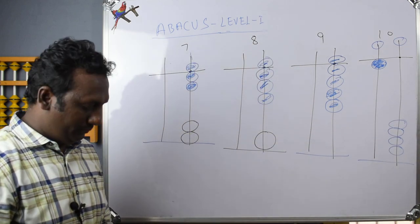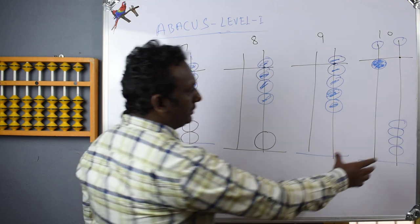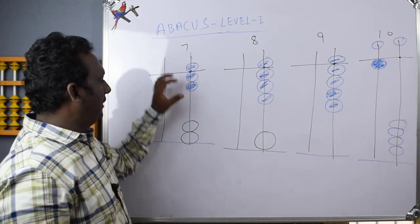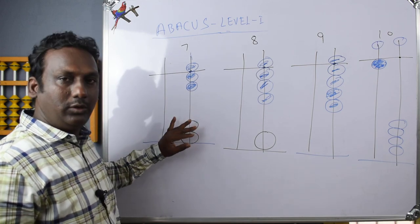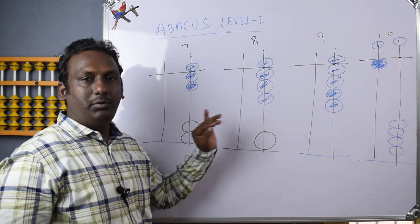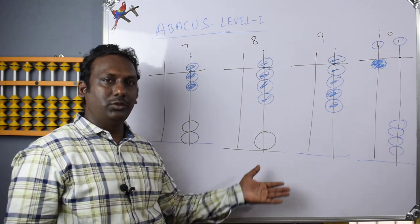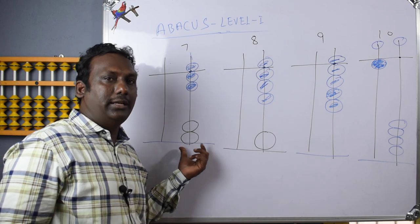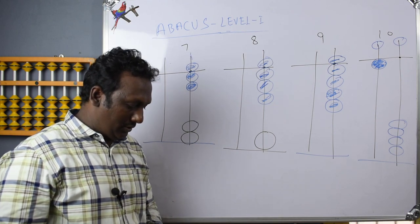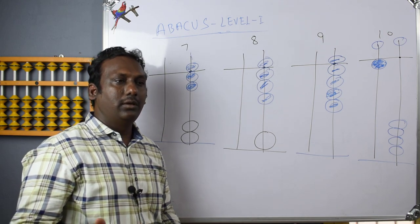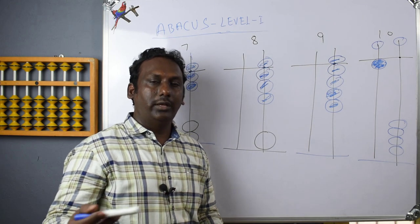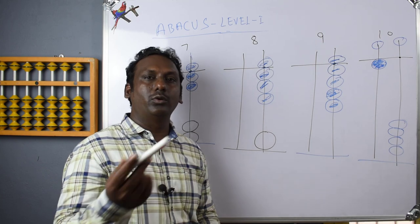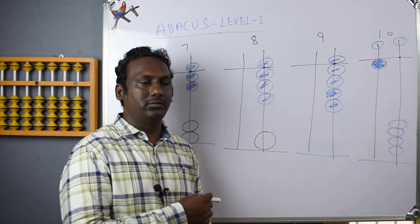For students, if the bead beats are confusing, first practice only the answer values. Answer beats: 7 is 1 upper beat and 2 lower beats. Then 8 is 3 lower beats. Practice the same 10 times — that is how we do it. If we ask the answer beats, think about the beats. We give a video course. If students and parents ask, teachers can do any subjects using this method.